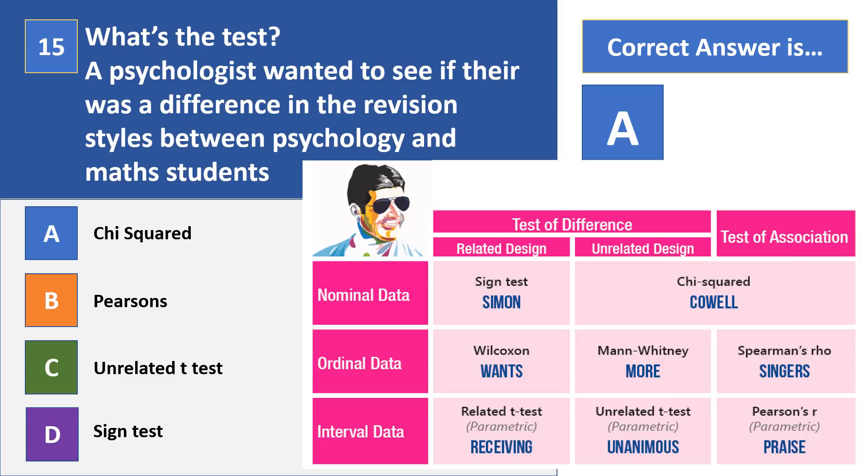So again, we are doing a test of difference. We are looking for a difference between the revision styles of the math students and the psychology students. We've got nominal data here because the revision style is going to be categorized, isn't it? So maybe like organized revision or cramming revision. And then we've got an independent groups design, which is an unrelated design, as we refer separately to the math students and the psychology students.